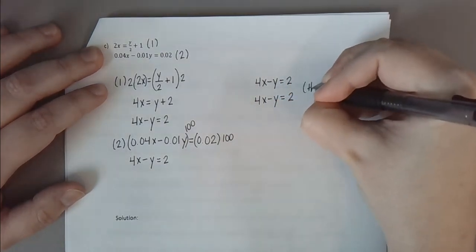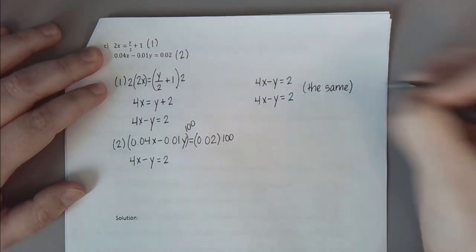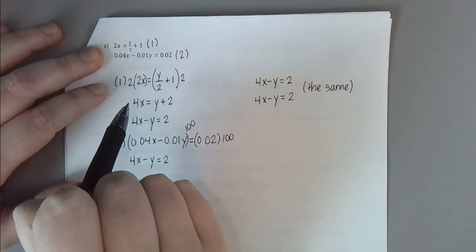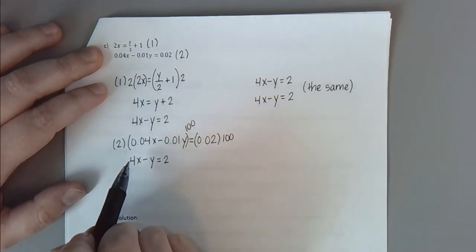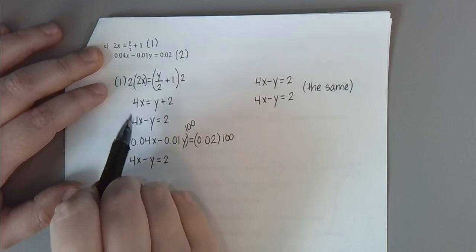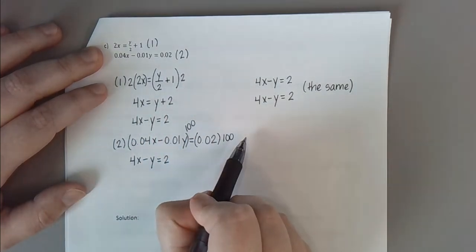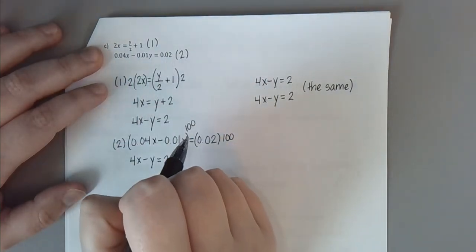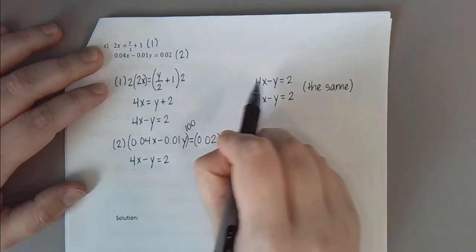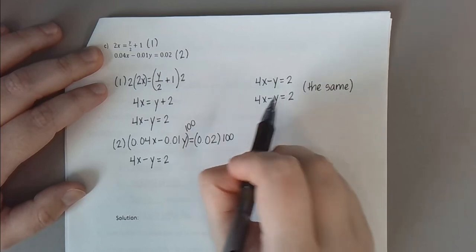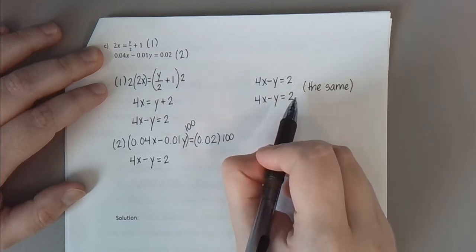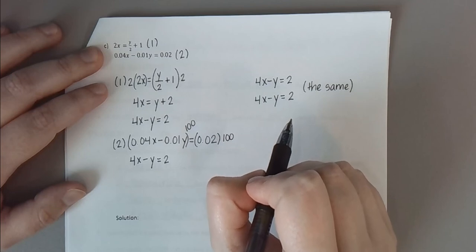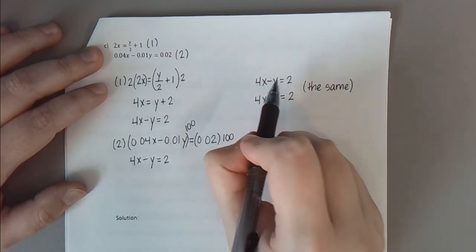Even though the two original equations looked vastly different, they are algebraically equivalent — just different versions of the same equation. That is what we mean by dependence: one equation is just a copy of the other. We don't get any extra information from the second equation. All we know about the relationship between x and y comes from that one equation, and one equation alone is not enough to uniquely solve for x and y.